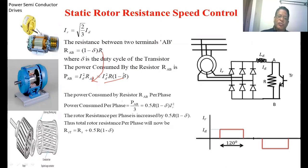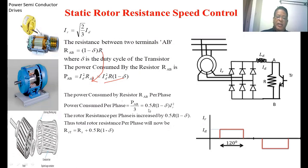This is the total power consumed by this resistance with respect to the DC. Now we find how much power is consumed by each phase. This power is divided by 3, because it is a three-phase induction motor. Substituting ID in terms of IR from the previous equation, we finally get 0.5 times R times (1 minus delta) times IR squared. Thus the rotor resistance per phase is effectively increased by 0.5R(1 minus delta).